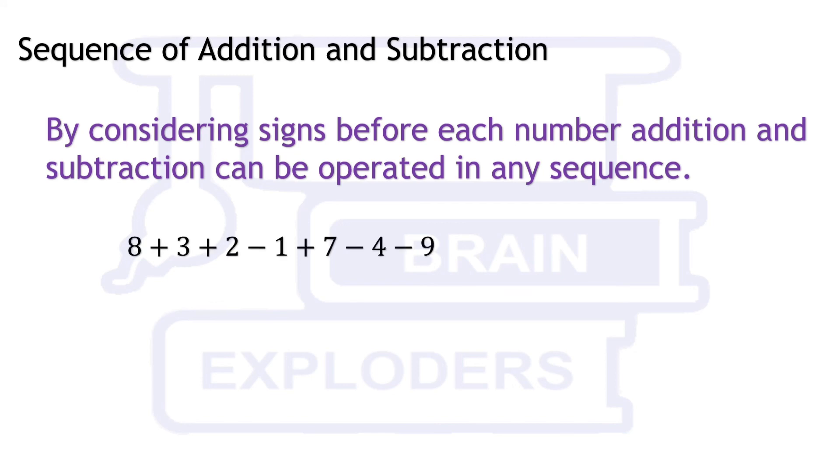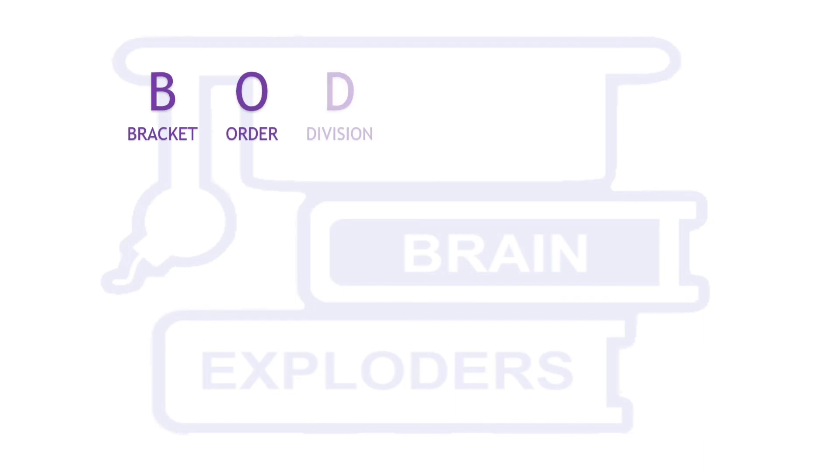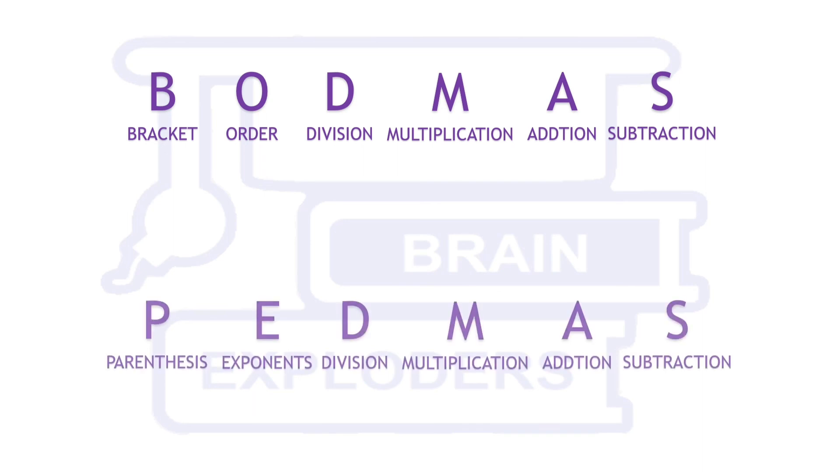It is shown here again with the example in which addition and subtraction are performed in a random sequence. Brackets are before order, order is before division, division is before multiplication, multiplication is before addition and subtraction, and they give the sequence of BODMAS. This sequence is also known as PEDMAS where P stands for parenthesis and E stands for exponents.